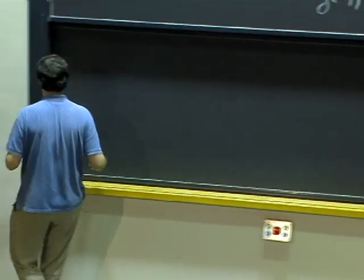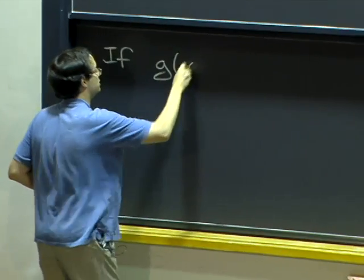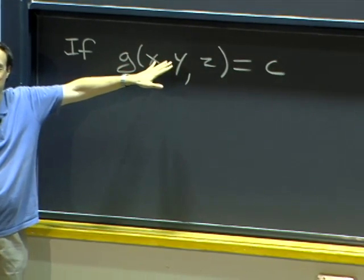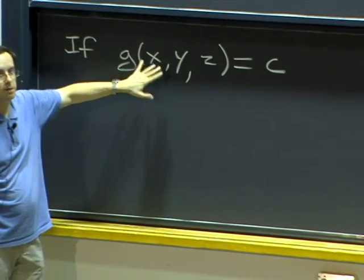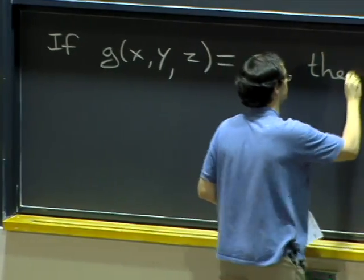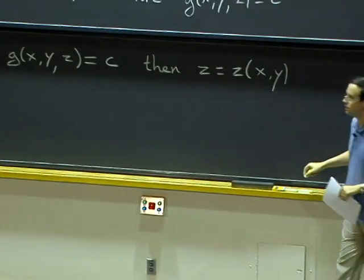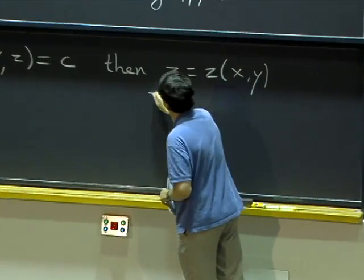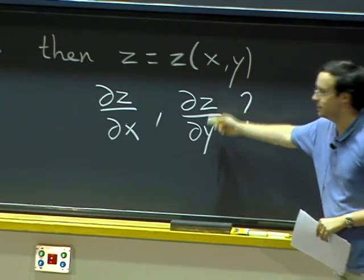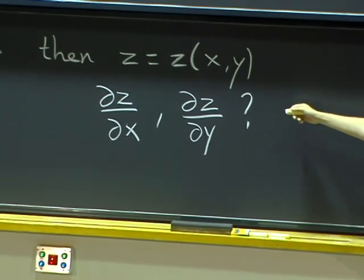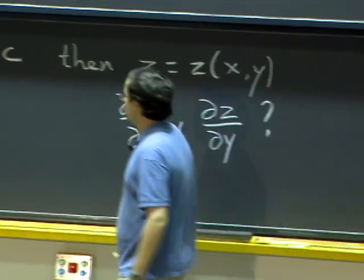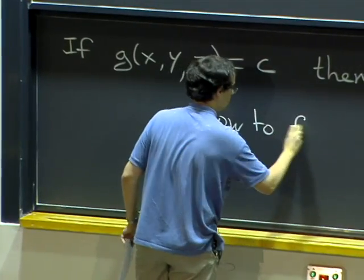The first observation is that if x, y and z are related, then that means, in principle, we could solve for one of them and express it as a function of the two others. In particular, can we understand — even without solving — how the variables are related to each other? For example, we can think of z as a function of x and y. So we can ask what are the rates of change of z with respect to x keeping y constant, or with respect to y keeping x constant. What if we cannot solve? How do we find these things without solving?